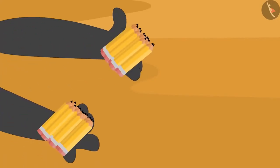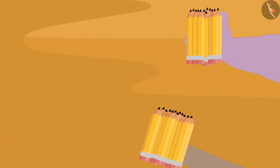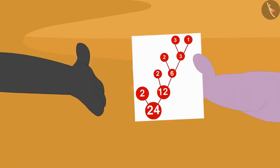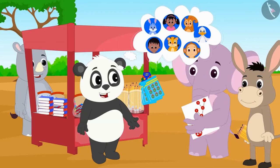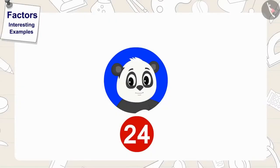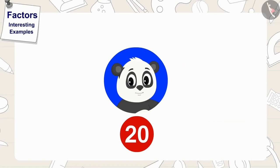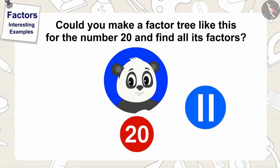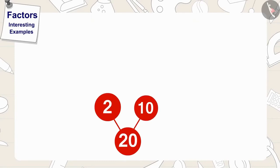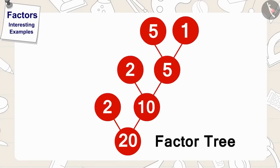Golu divided his twenty-four pencils equally among his two friends and after giving them a picture of the factor tree, accordingly they should distribute the pencils equally to their friends. Children, if Golu had twenty pencils instead of twenty-four, could you make a factor tree for the number twenty and find all its factors? If you want, you can stop the video and find the answer. Well done, children, you have made this factor tree correctly.